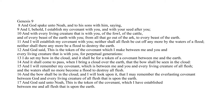God then establishes a covenant between him and all flesh, that he will never destroy them again by flood. He also offers the rainbow as a token of this promise — whenever it rains, the rainbow will be present as a token. There is no way this covenant can be broken by mankind or by angels. He just gave his word that it would be so.